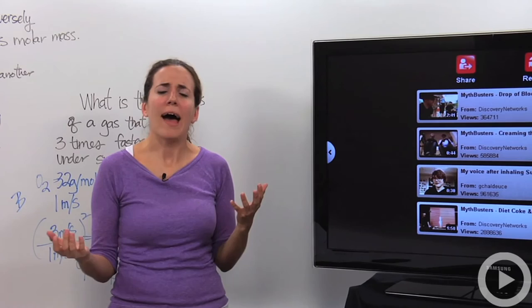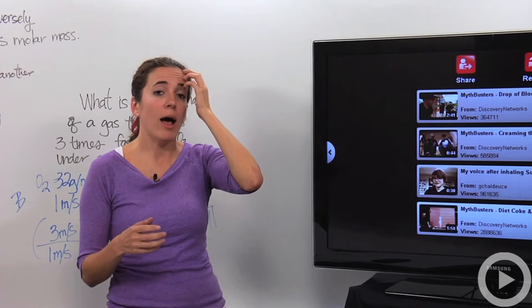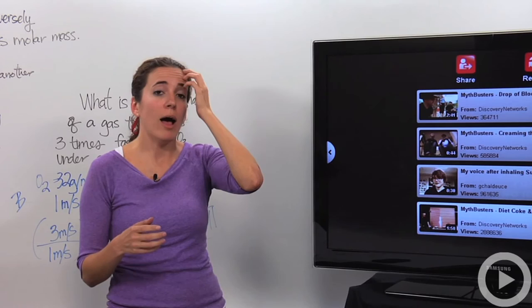All right. So how did Graham's Law play a part of that? Well, helium that he inhaled was actually very, very light. So it traveled through his throat and traveled through his vocal cords very quickly. And so it made his voice very, very high.